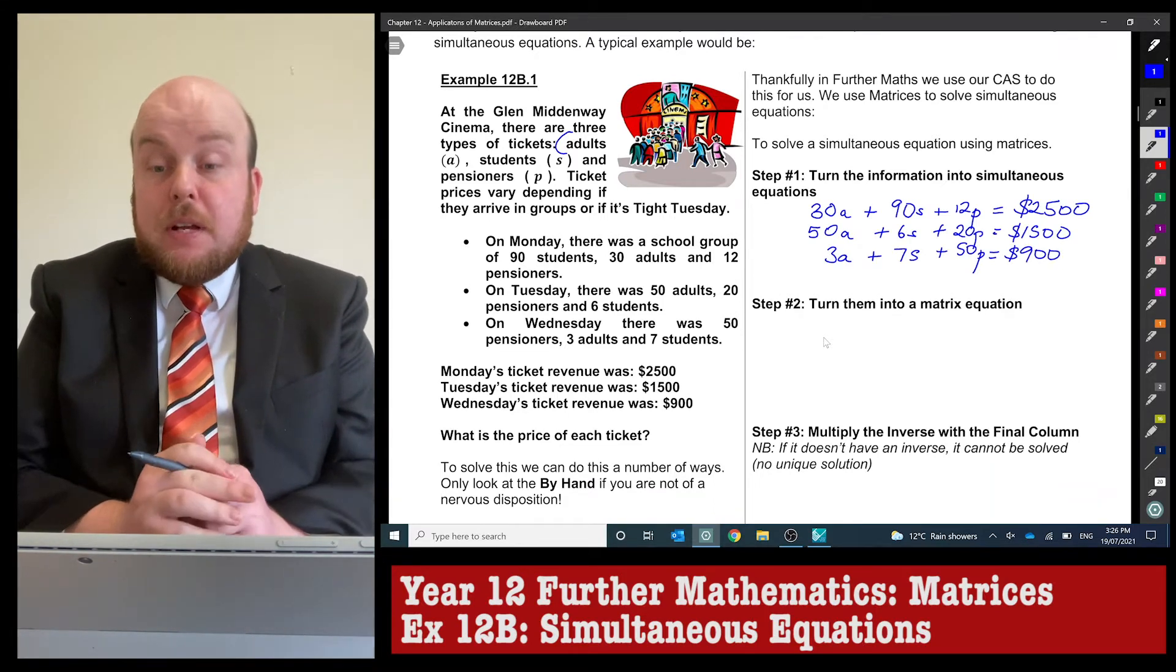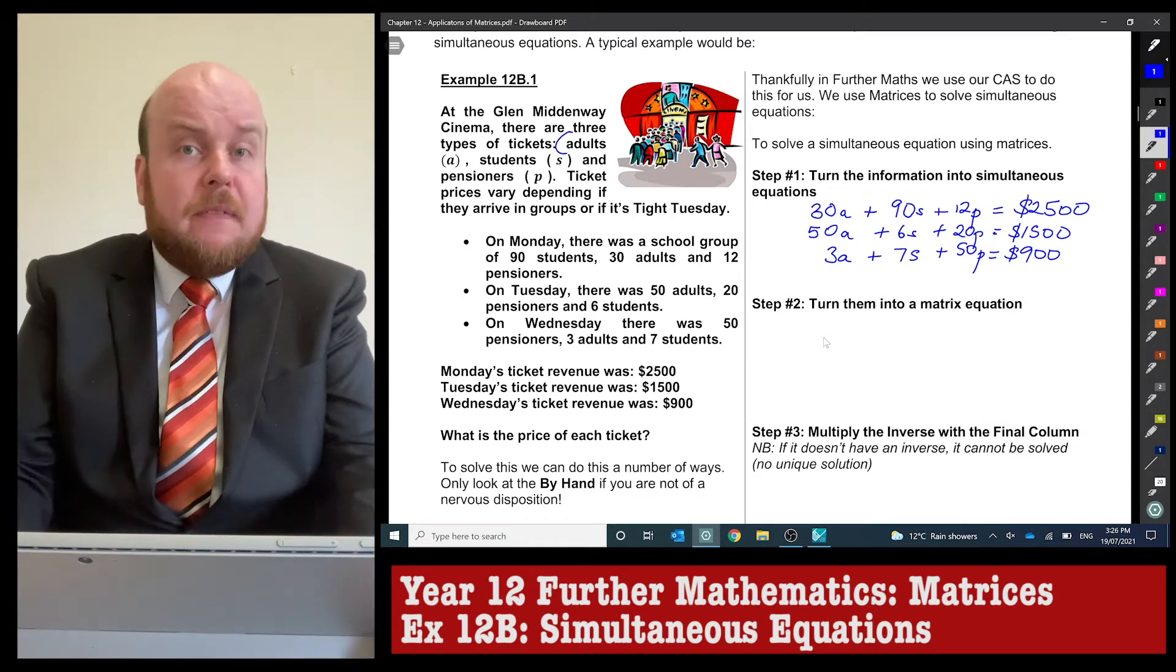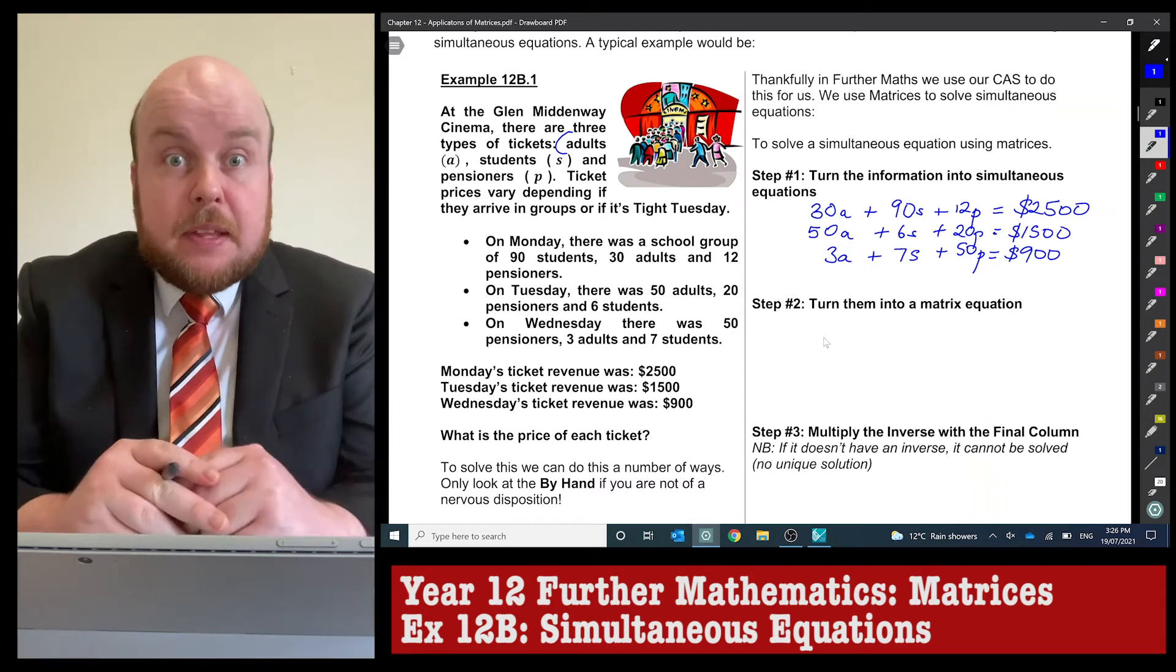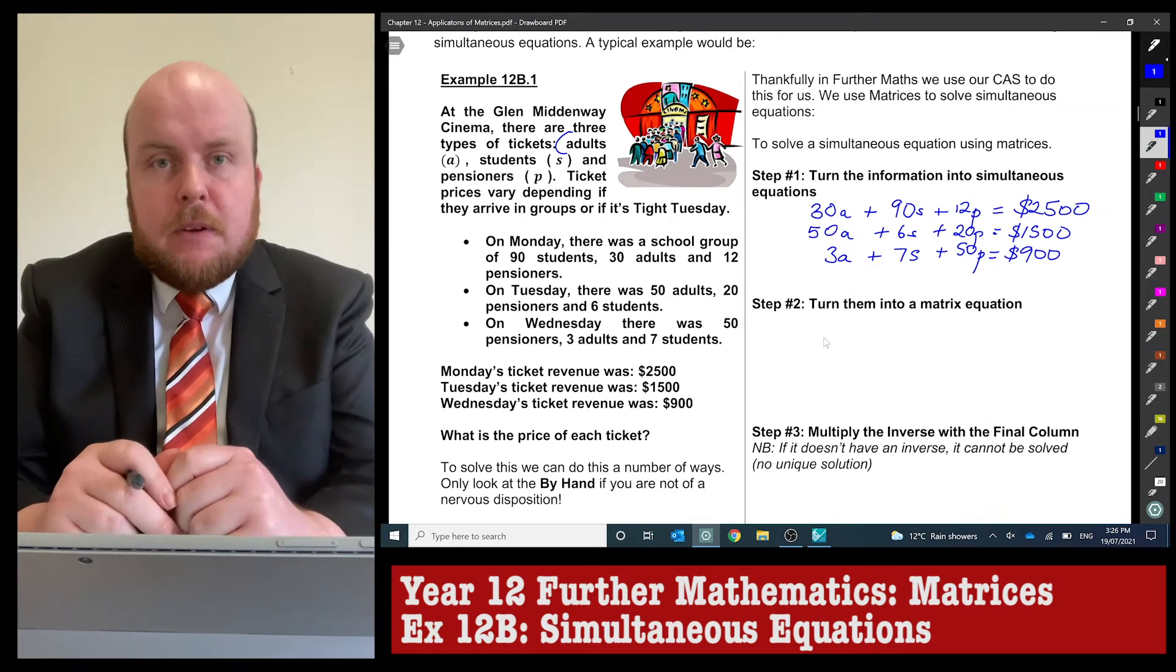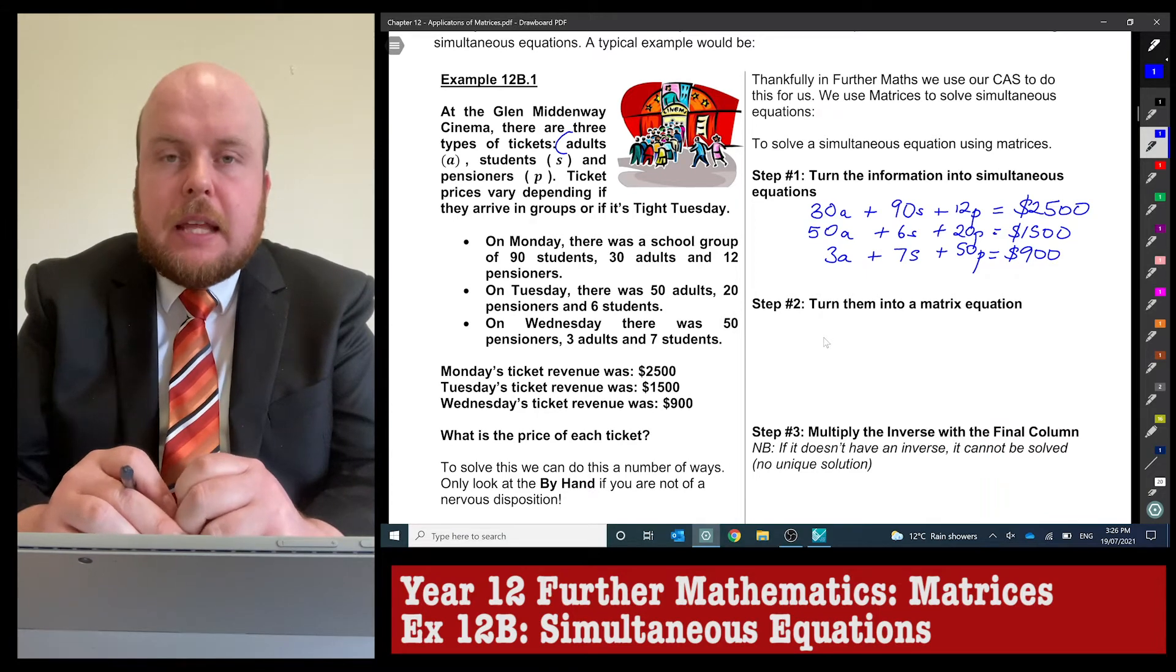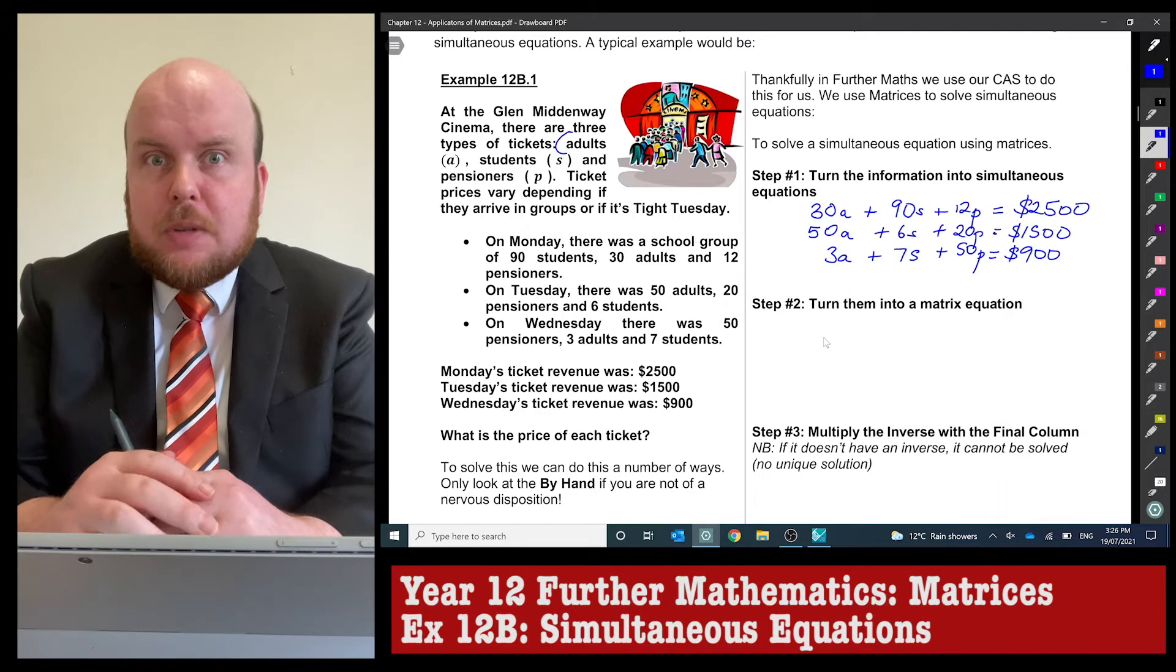I've now described the information as simultaneous equations. I made sure to line up all the variables one underneath each other. Some people might think I'm being pedantic, but if you've done simultaneous equations by elimination, you'll know why. It's very important when we show how to do this using matrices.